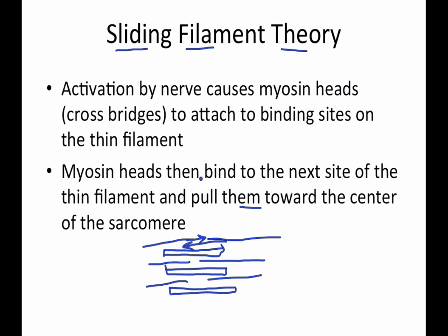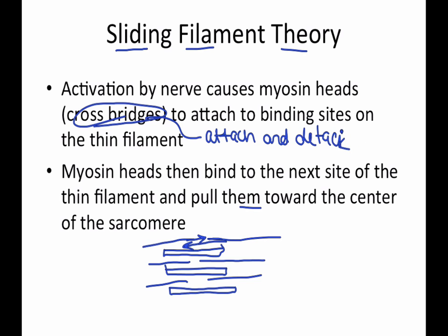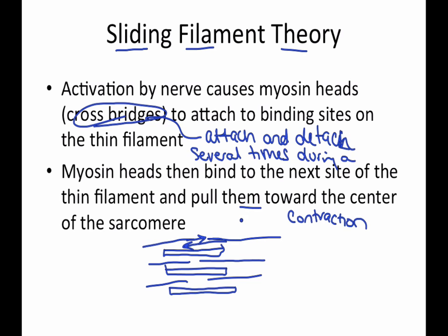Each cross bridge is going to attach and detach several times during a contraction. And what happens is these actually look as if they're shortened, but they're really just pulled closer together, not actually shortened.